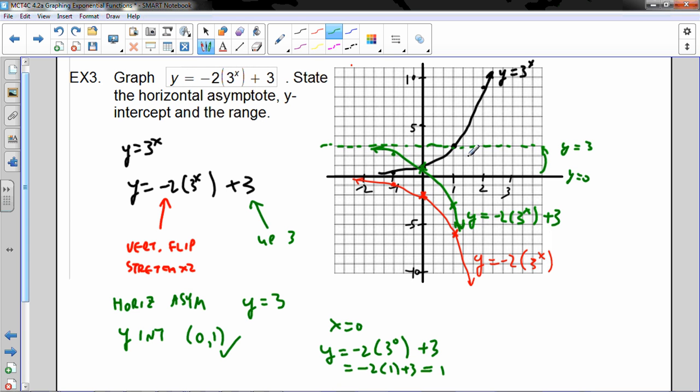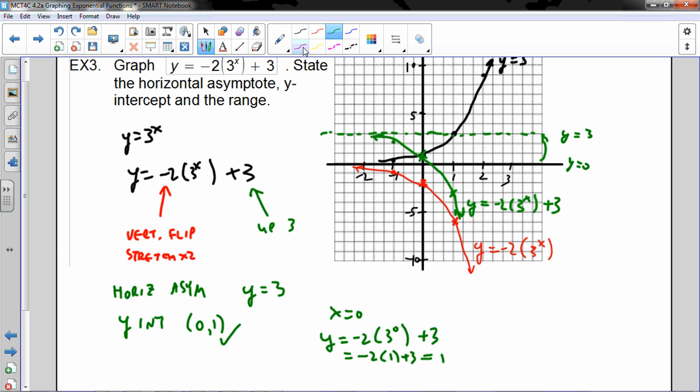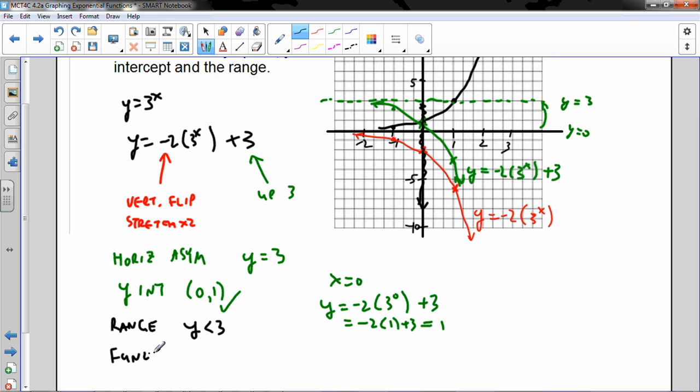And the range. Notice the domain is still all real numbers. Even though I flipped and stretched and moved this thing left and right. It's still all real numbers. But the range is different, right? Well, where's the shadow on the y-axis for this green function? I can see it goes up here and then all the way down, right? It never quite becomes y equals three. That's the asymptote. So the range, then, is y is less than three. All the numbers less than three. And notice that this function is always decreasing as well. The function is always decreasing. I think that's a question that your book asks once in a while.